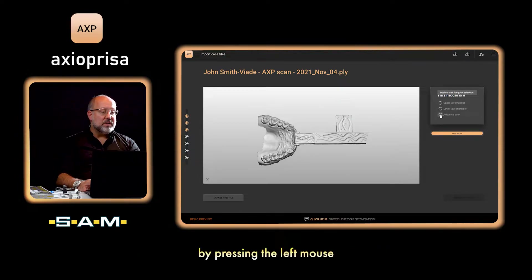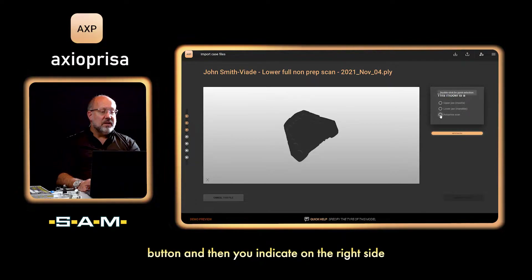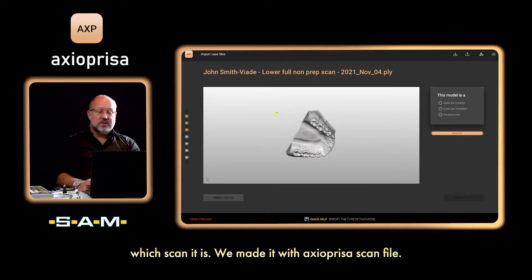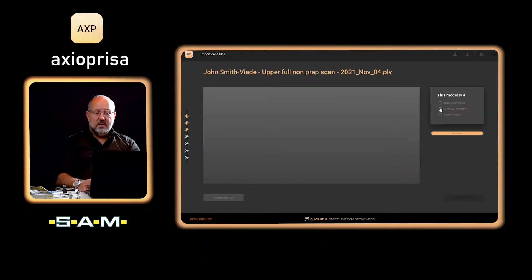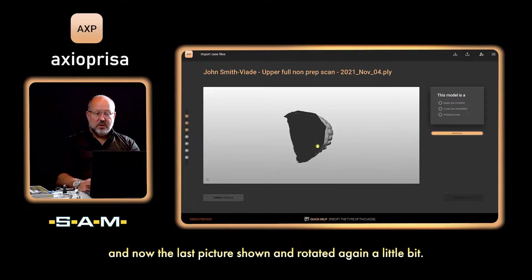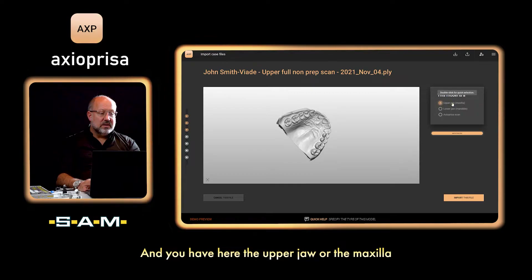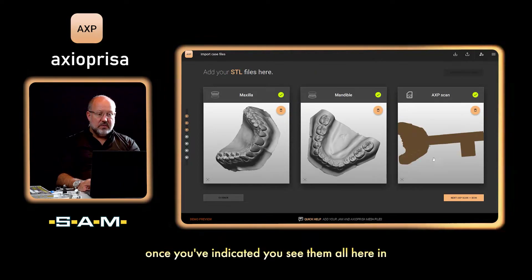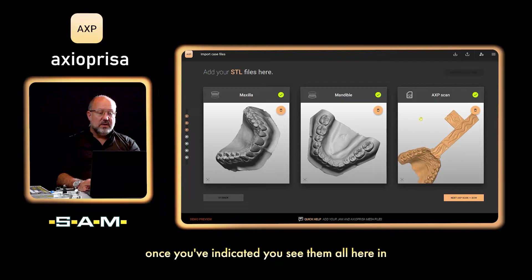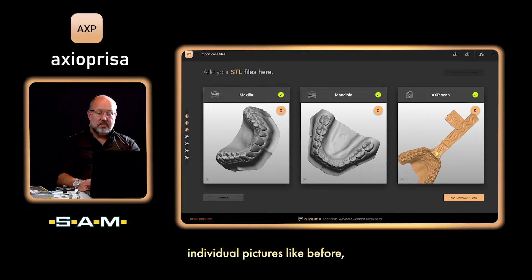Now you have to assign them. In the middle screen you have the picture — you can rotate it by pressing the left mouse button — and then on the right side indicate which scan it is. Refer them to the lower jaw, and for the last picture rotate it again a little bit and indicate the upper jaw or maxilla. Once you've indicated all of them, you see them in individual pictures.